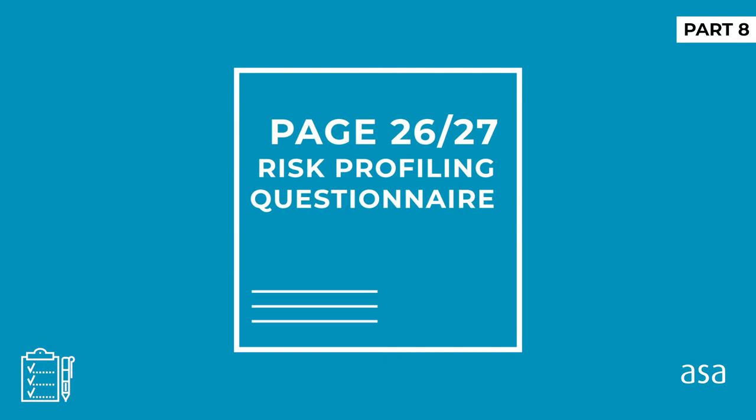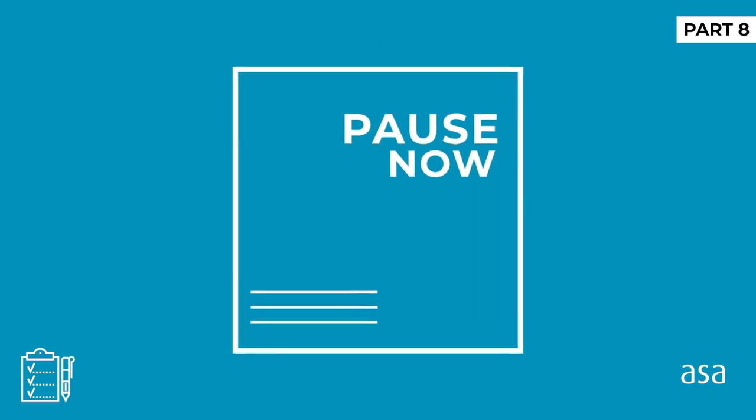Follow the instructions, answering each question and tallying up your score at the end. Your score will correlate to a particular risk profile. Pause the video — this might take five to ten minutes. If it takes longer, you're overthinking it. Make sure you answer with your initial gut response, not how you think you should act. Go ahead and pause, then come back when you're done.